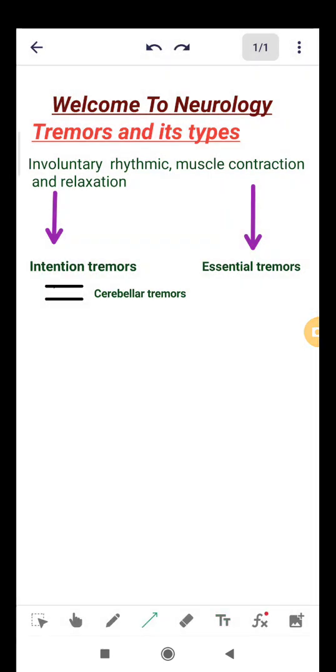Now let's discuss the third tremor type, orthostatic tremors. Orthostatic tremors are usually high frequency tremors. They occur in legs and trunk after standing up.